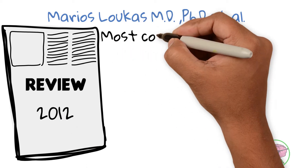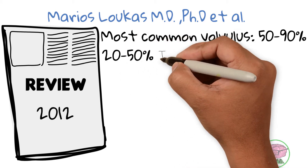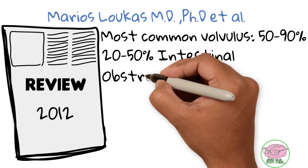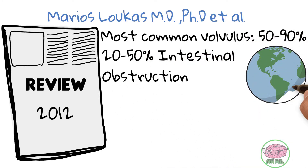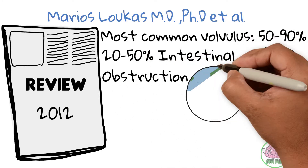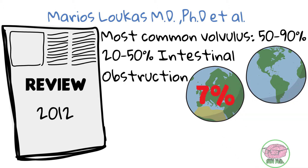This review stated that sigmoid volvulus is the most common type, accounting for 50 to 90 percent of all volvulus cases. It represents 20 to 50 percent of all intestinal obstructions in the developing world, while only 7 percent in developed countries.